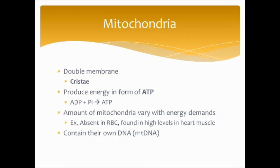The amount of mitochondria per cell varies with energy demands. Some cells don't have many or any, like red blood cells, whereas heart muscle and skeletal muscle are very high in mitochondria because they need a lot of energy. One special thing about mitochondria is that they contain their own DNA — mitochondrial DNA, abbreviated mtDNA. It's passed on maternally, and there are some diseases implicated with mutations in mitochondrial DNA.